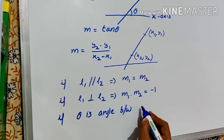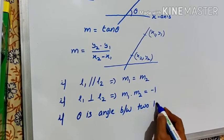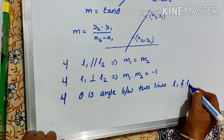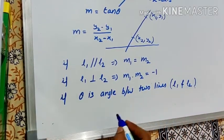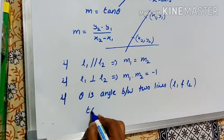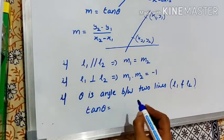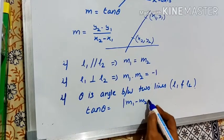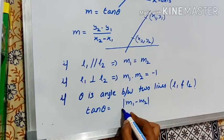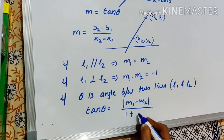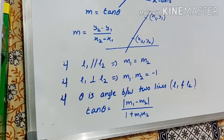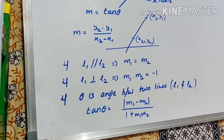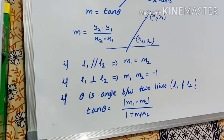Now, if theta is the angle between two lines, say L1 and L2, then tan theta is equal to the modulus of m1 minus m2 upon 1 plus m1 into m2, where m1 is the slope of line 1 and m2 is the slope of line 2.